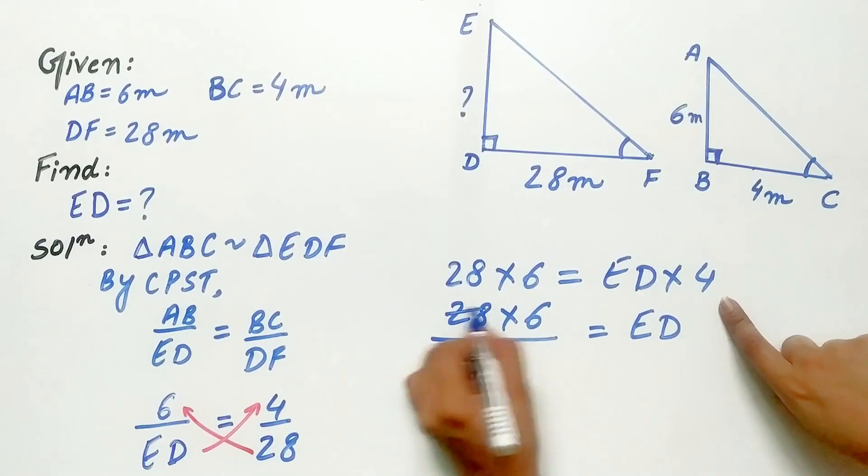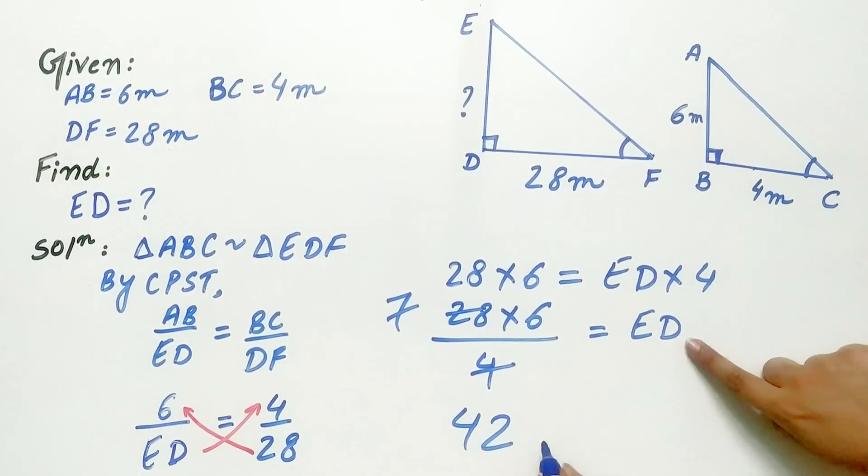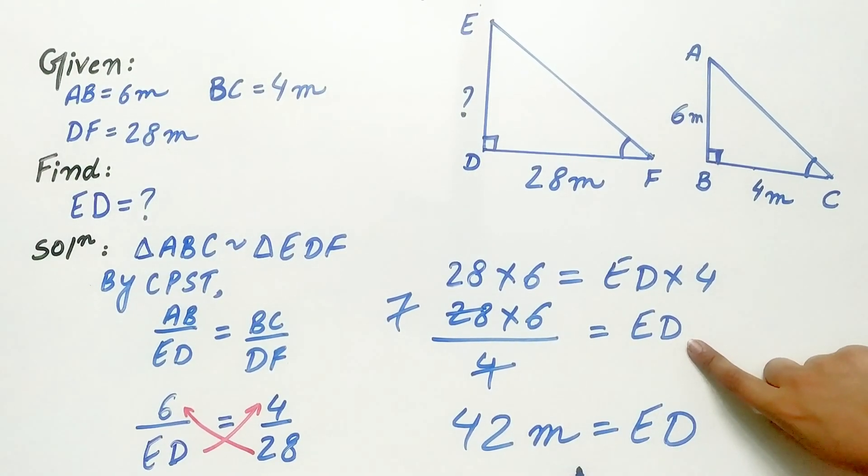Now 4 sevens are 28, 7 sixes are 42. Hence ED is equal to 42 meters.